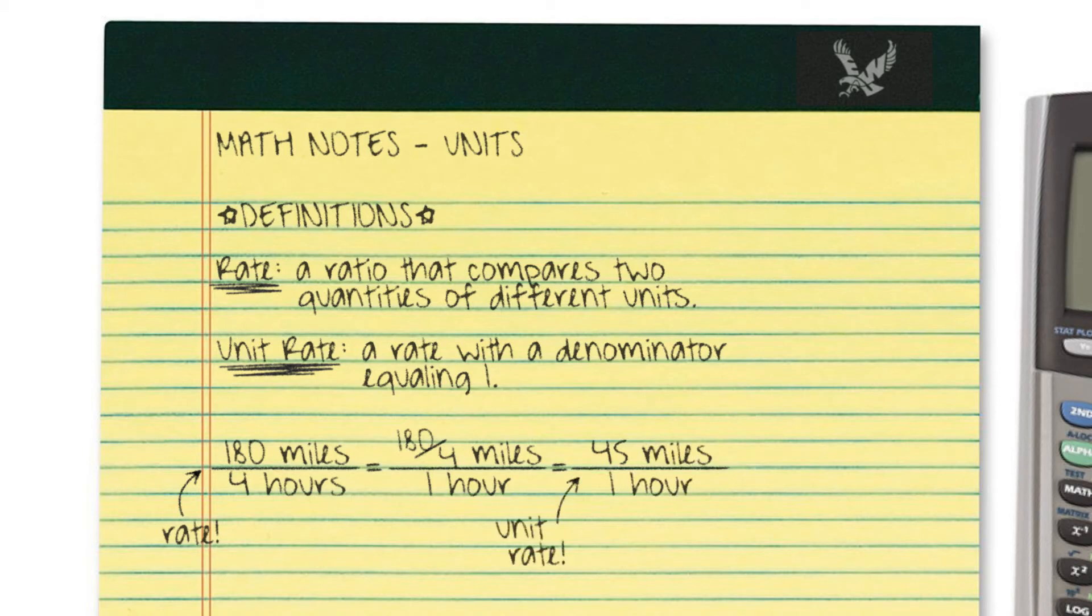Comparing distance to time creates a new unit, a unit of speed, in this case, miles per hour, and we can easily express the speed of the car by saying that it's traveling 45 miles per hour.